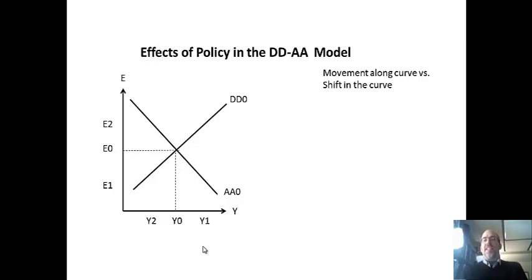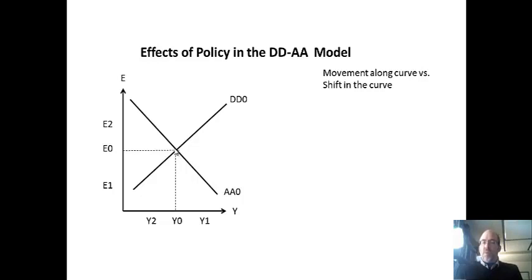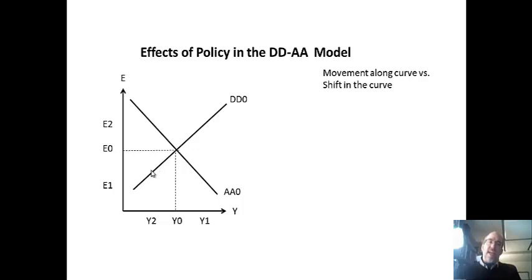Now we're going to do both curves together. It's important to note you can look at movement along the curve as well as a shift in the curve. If you shift one curve, the other will move as well. If printing money shifts AA and weakens the currency, the weaker currency increases exports. So you move along the DD curve because the weaker currency shifts the aggregate expenditure curve. Shifting AA simply moves along DD to get two of the points that make up the curve, rather than shifting the whole DD curve itself.